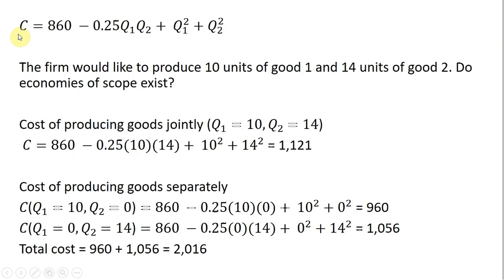So here we have a multi-product firm that produces two types of goods. Q subscript 1 and Q subscript 2 represent the different types of goods here. And we want to see if economies of scope occur given this functional form of this cost function. So the firm would like to produce 10 units of good 1 and 14 units of good 2. Do economies of scope exist?